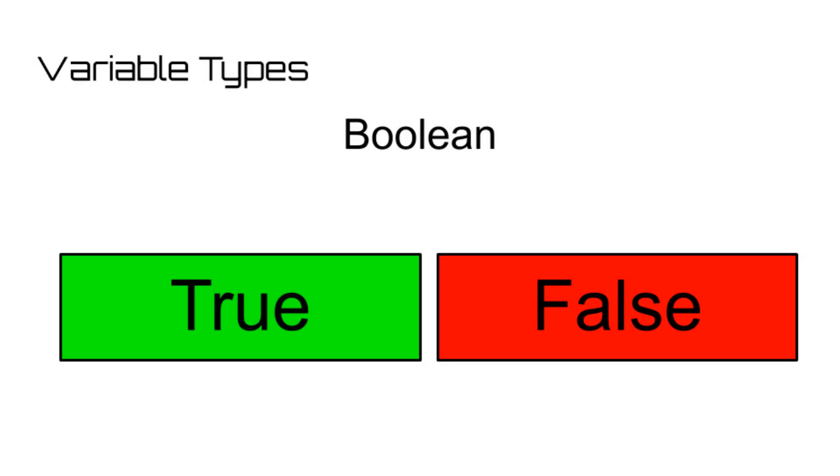Secondly is a boolean. A boolean can store values of either true or false. This variable is very useful for conditional statements, which we will cover in a future video.